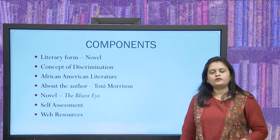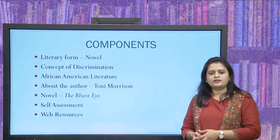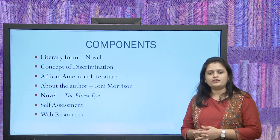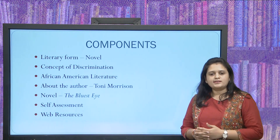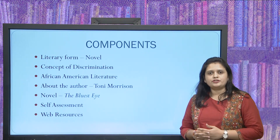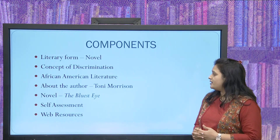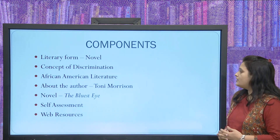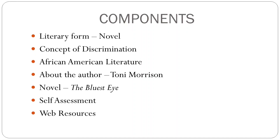Today we are going to learn about the literary form novel, the concept of discrimination, African-American literature. We are going to learn something about the author Toni Morrison, about the novel The Bluest Eye. Then you will have some self-assessment questions and I will be giving you some links for further reading.